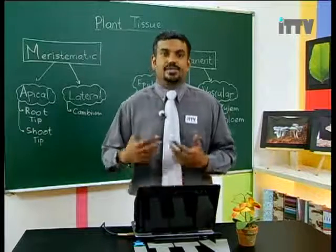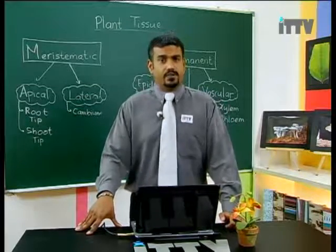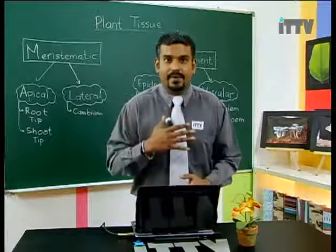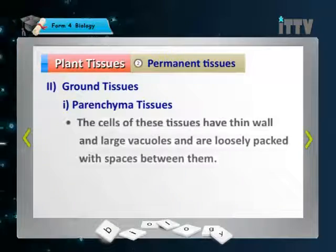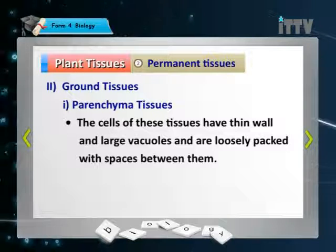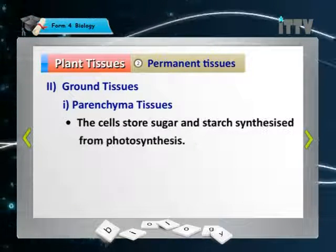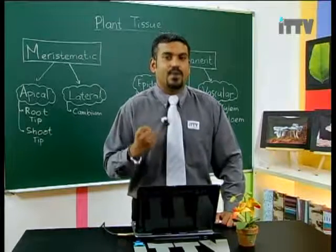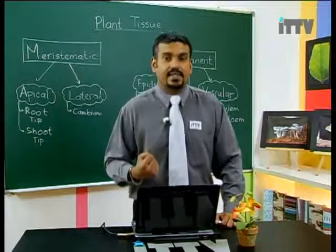The cells of parenchyma tissues have thin walls and large vacuoles, and are loosely packed with spaces between them. The cells are the least specialized and can be found in all organs of the plant. The cells store sugar and starch synthesized from photosynthesis — so parenchyma tissue acts as a storage facility for the plant.